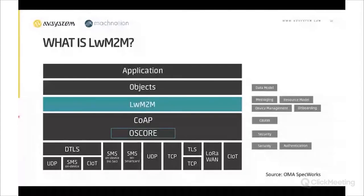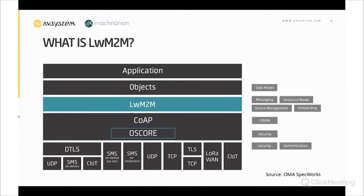Below CoAP is the transport layer, with multiple protocol bindings: UDP with security via DTLS, TCP with TLS, SMS transport both with and without security, transport secured with DTLS on smart card, and also bindings to non-IP data delivery with LoRa and cellular IoT.